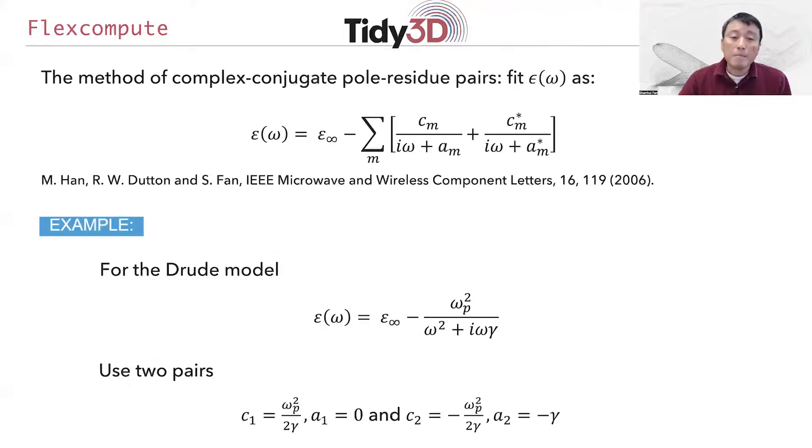There are many ways to do so. One of the popular methods is the so-called complex conjugate pole-residue pair method. In this method, you take the frequency permittivity, the frequency dependence of the permittivity, and you express them in this functional form consisting of a sum of single-order poles. In these cases, for example, the a_m here are the poles that describe some of the resonant frequencies of the material. As an example, for the Drude model that we have previously used to describe gold, you can use two pairs in this method in order to describe the Drude model.